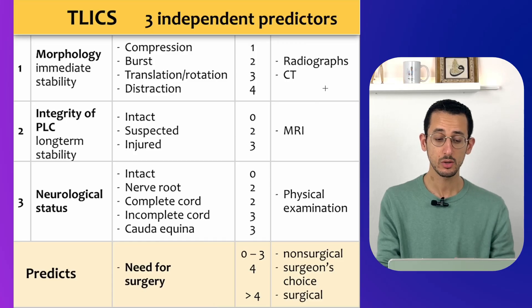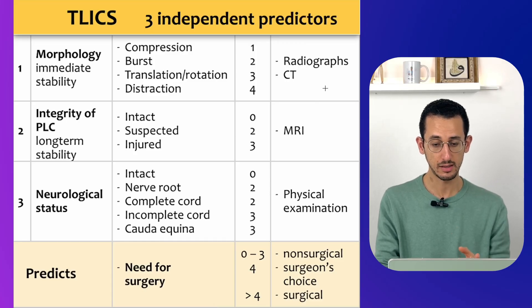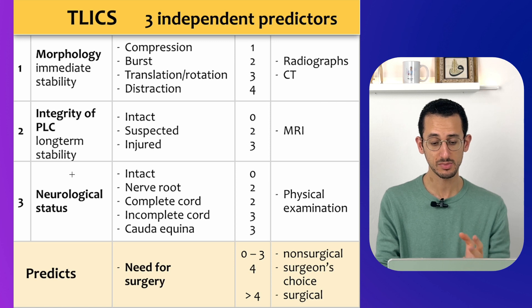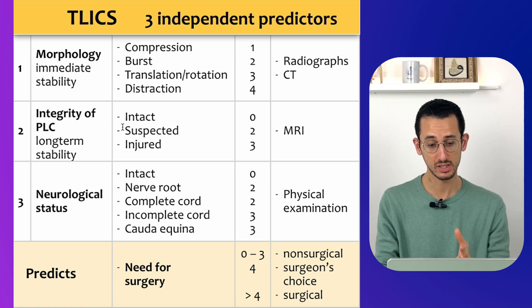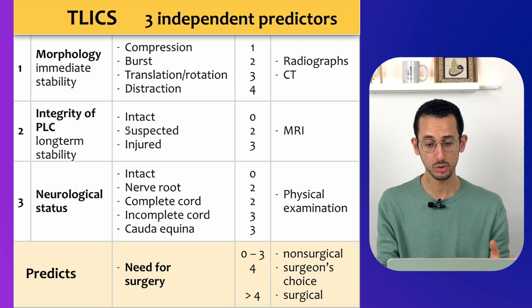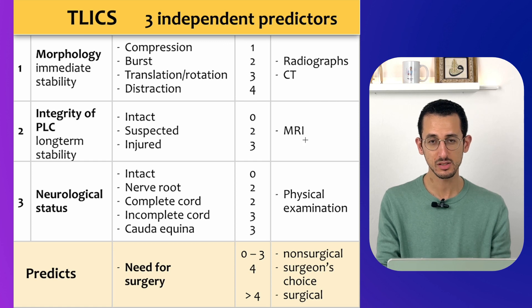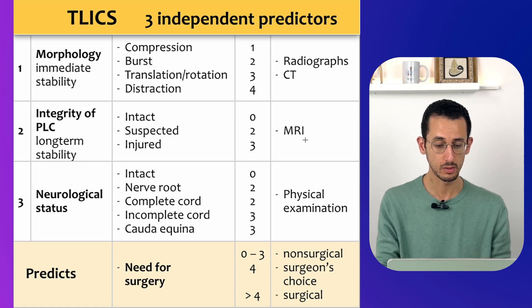So we look at the morphology and give the score as stated. Then we look for the integrity of the ligamentous structures. Sometimes it can be intact, which takes zero. Suspected — meaning we are not sure — takes two. Or injured, which takes three points. For that, you will likely need an MRI scan, though sometimes you can get an idea from the CT scan as well.